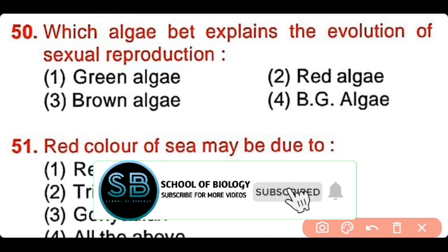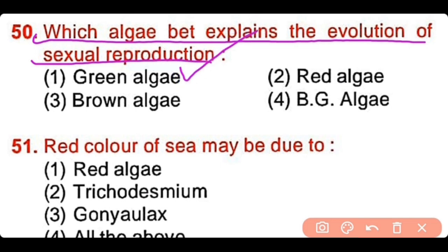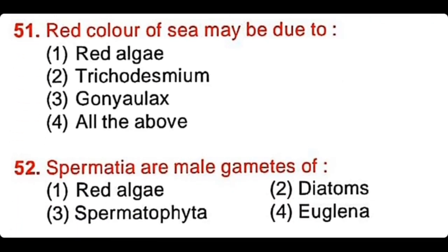Question number 50: Which algae best explain the evolution of sexual reproduction? Green algae, red algae, brown algae, or blue-green algae? The correct answer is option 1. Green algae, especially Chlamydomonas, best explain the evolution of sexual reproduction.